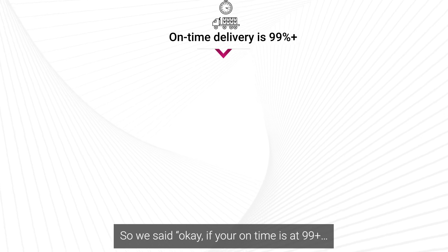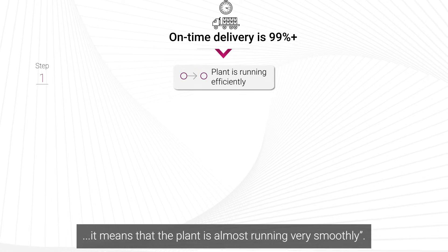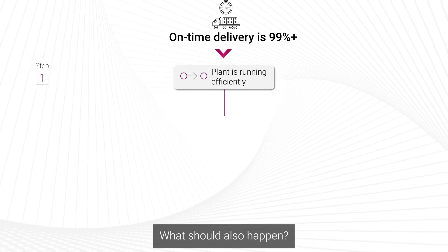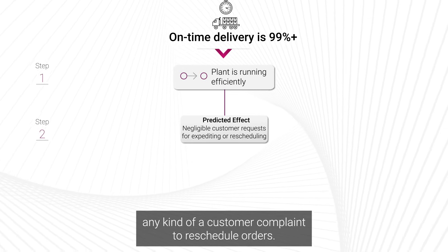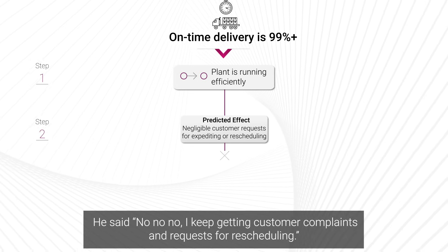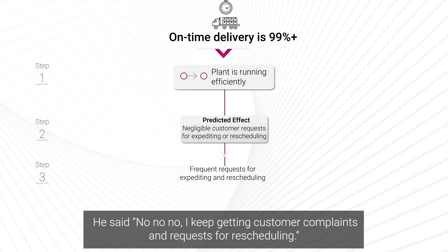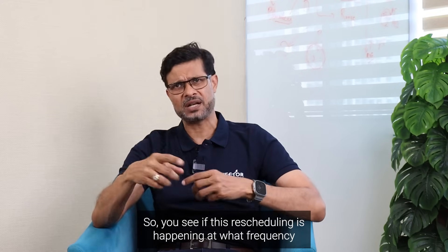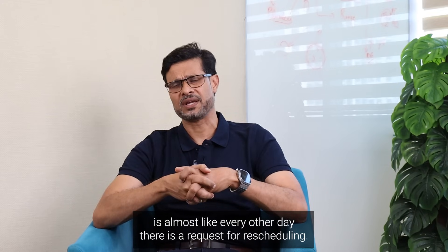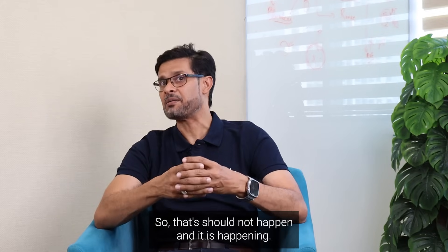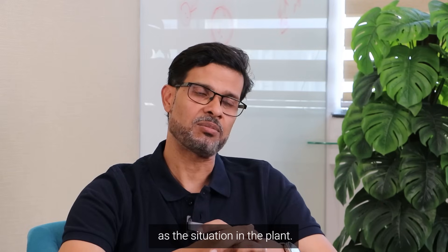We said: if your on-time is at 99-plus percent, the plant should be running very smoothly — so you should hardly be getting customer complaints or requests to reschedule orders. But the operations manager said he was getting customer complaints and rescheduling requests almost every other day. That should not be happening if on-time is truly that high — so we started to doubt the claimed situation.